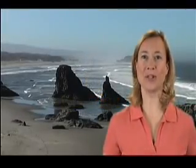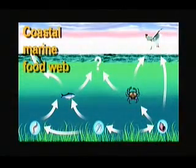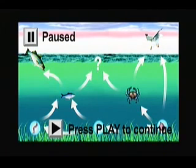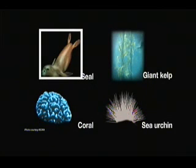Now it's your turn to explore a food web. Here is a coastal marine food web — study the food web and choose the correct animal to fill in the blank spot. The choices are seal, coral, giant kelp, or sea urchin.